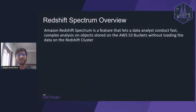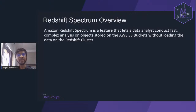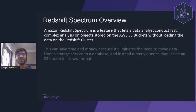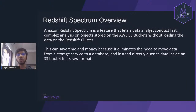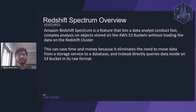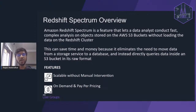Now let's understand Redshift Spectrum, which is a very interesting topic. Redshift Spectrum gives you the ability to create external tables for data residing on Amazon S3 buckets. If you have data on S3 and want to query it, rather than loading it into a Redshift cluster, you can directly query the data by creating external tables. This eliminates the workload of creating an ETL pipeline to load data from S3 to Redshift — saving time, effort, and money. You can query data in its raw format directly from the S3 bucket.